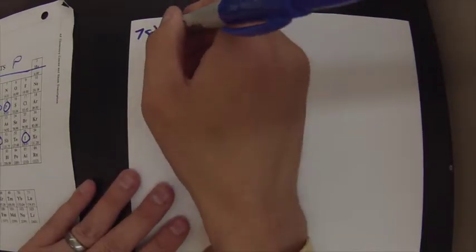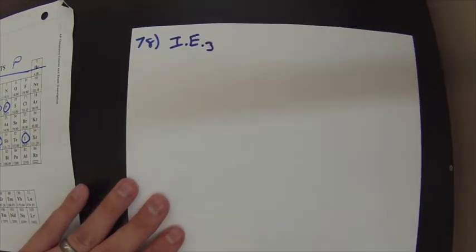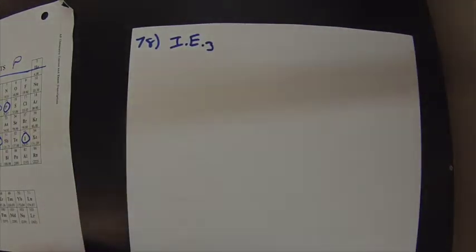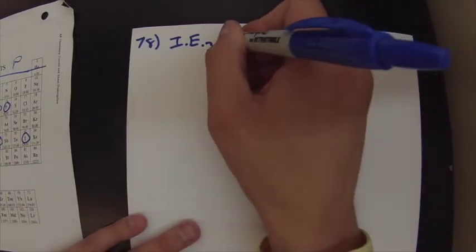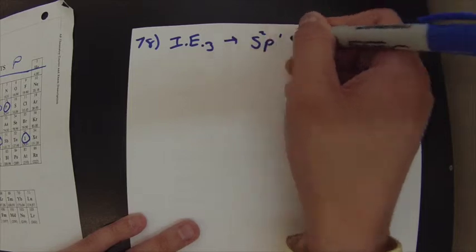Alright, 600, 1800, 2700, 12,000. So the big jump here is after ionization energy 3. Meaning, ionization energy 3 is the last of the valence electrons. Which means that this is an S2P1 atom. Because it has three valence electrons.